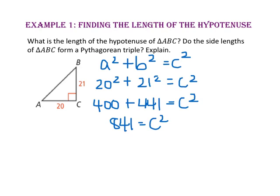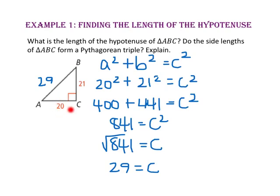Take the square root of both sides and the square root of 841 equals c. Since the square root of 841 is 29, the length of the hypotenuse is 29. Since all three side lengths are non-zero whole numbers, the sides of triangle ABC do form a Pythagorean triple.